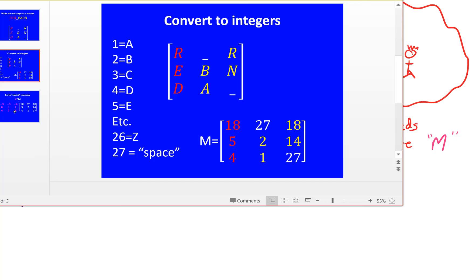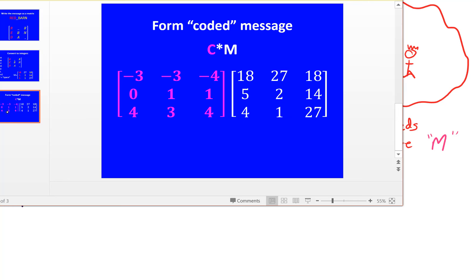What we want to do is encode that message. So we're going to come up with a coding matrix called C, and we will code up the message by multiplying C times M. So let's go back to our picture for a moment.